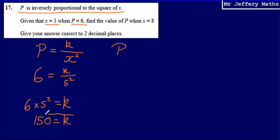Now we know the value of K, we can write a full formula for P in terms of X. So what we can say is that P will be equal to 150 divided by X squared.